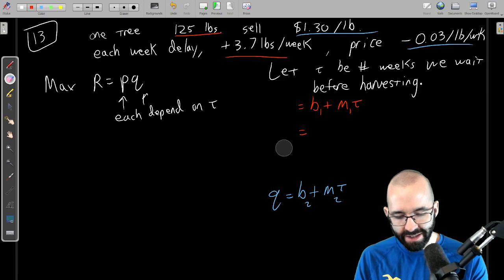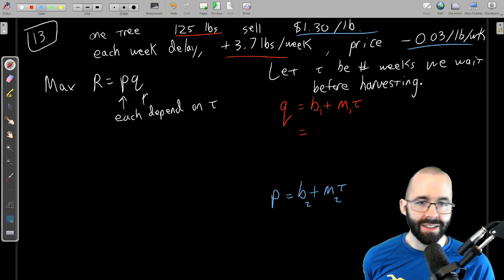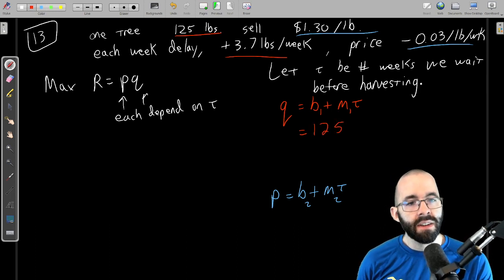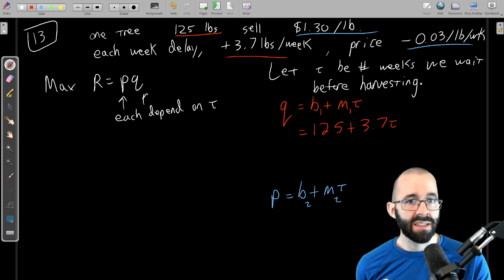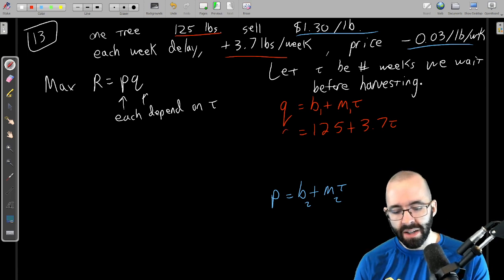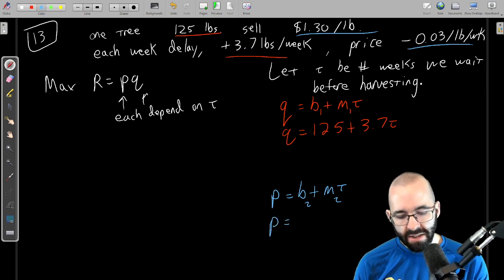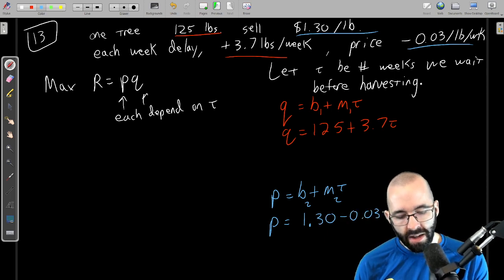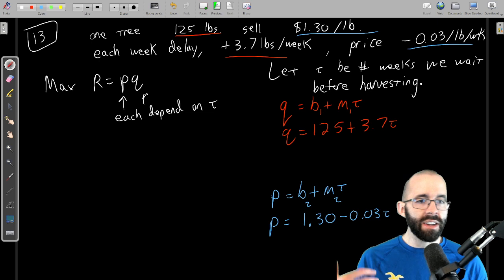So we could find the slope, we could find the b value, or we actually have it given to us. Hold on, our color coding is wrong guys. I said Q is red and P is blue, I just want to be color coded. So look at our quantity, it says we start at 125 and it goes up by 3.7 every week. That is the slope, that's exactly what slope means. Again you could find this equation out the old fashioned way and take a little longer, but it gives the information right here. For the price it says we start with $1.30 per pound, but that goes down by 3 cents per pound every week.